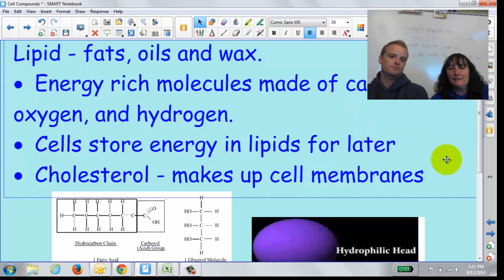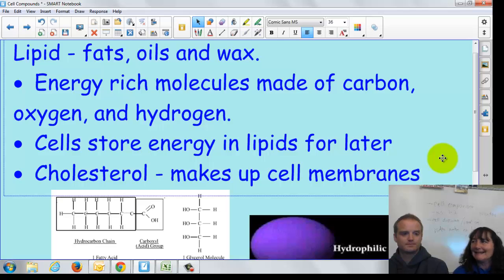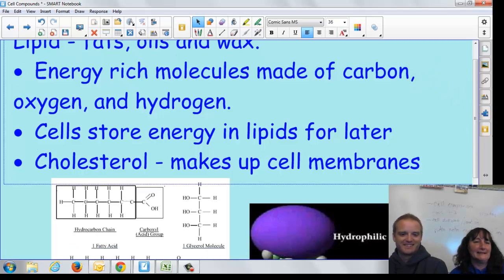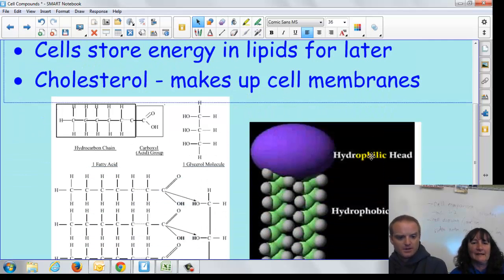All right. And then we have lipids. These are fats, oils, and wax. And another thing that people say, oh, you've got to stay away from the fats. But you need to have fats. They're energy-rich molecules made of carbon, oxygen, and hydrogen. And these cells store energy in the lipids or the fats for later use. So if you're going to have energy to use, you've got to have some lipids in your diet. I think my bacon has fat in it too for me. Yeah, so then you've got a double duty there in fat and your protein. And then there's cholesterol. And that's something, bad to have cholesterol, but you've got to have some cholesterol because that makes up your cell membranes. So you've got to have cholesterol and fat.